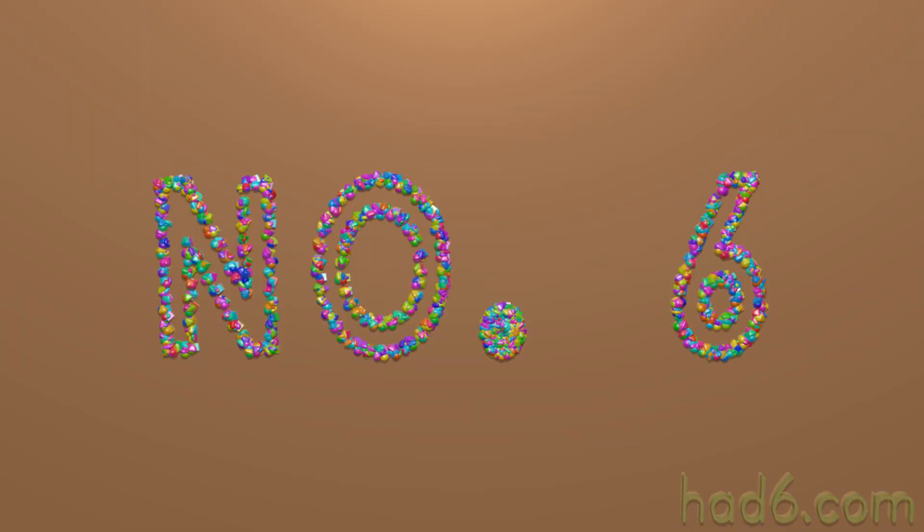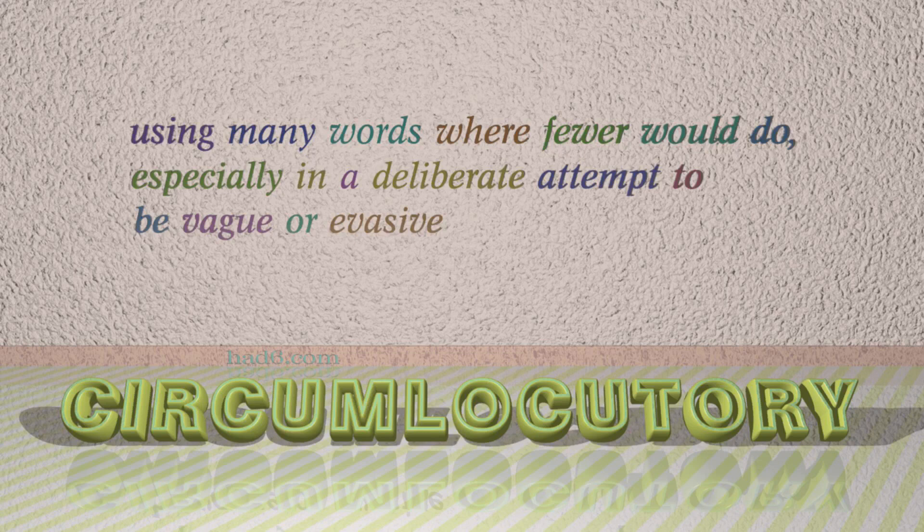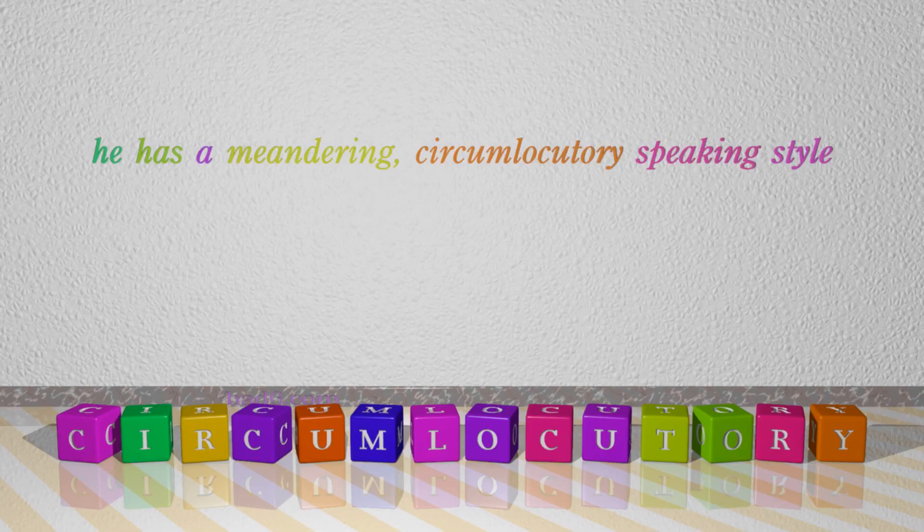Number 6: Circumlocutory. Which means using many words where fewer would do, especially in a deliberate attempt to be vague or evasive. For example: He has a meandering, circumlocutory speaking style.